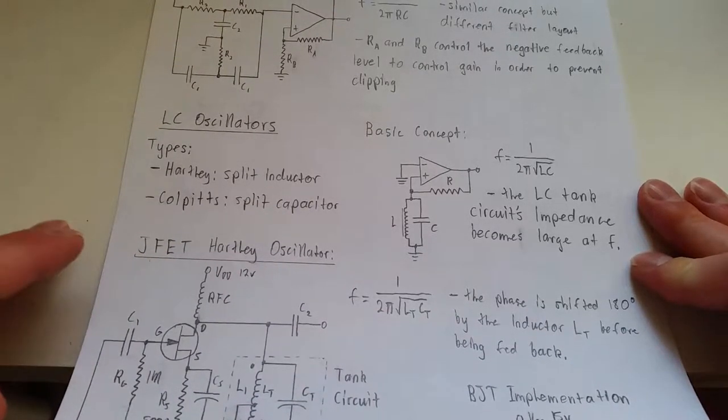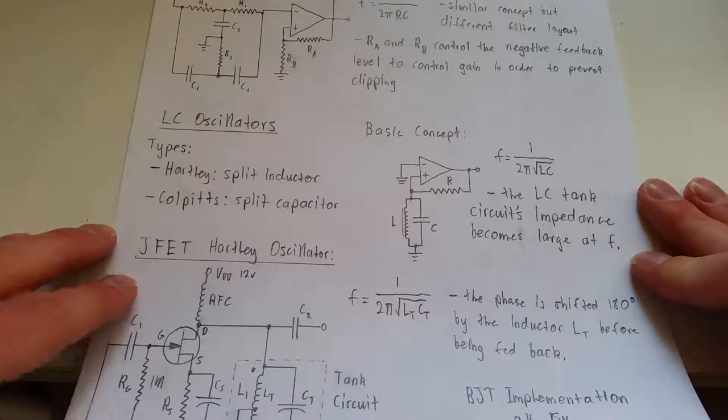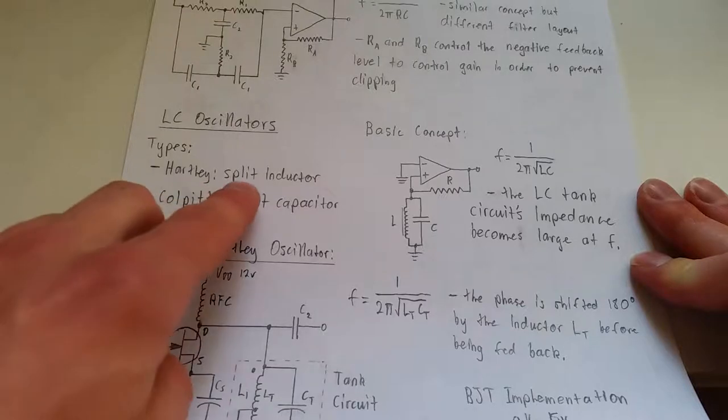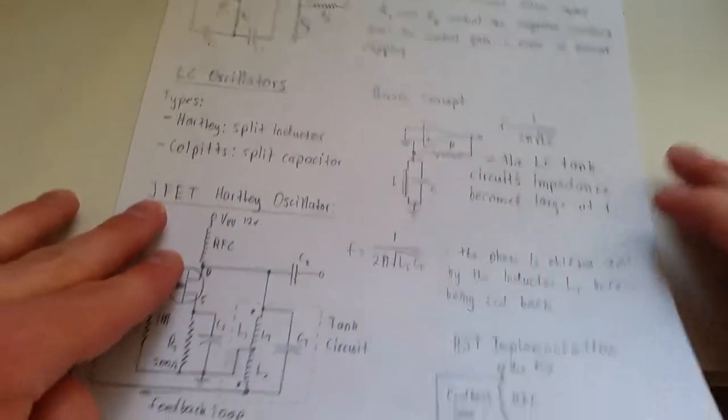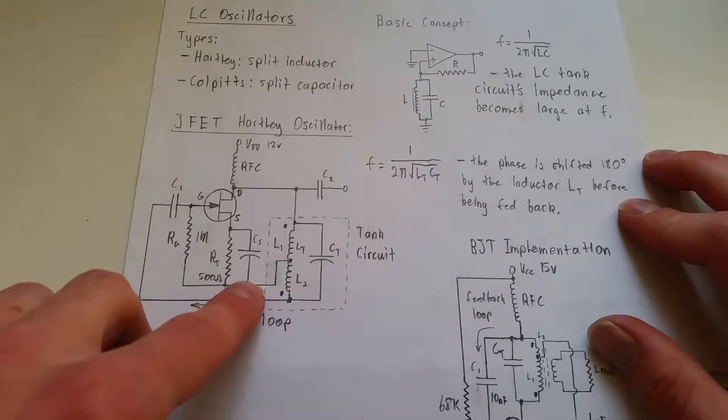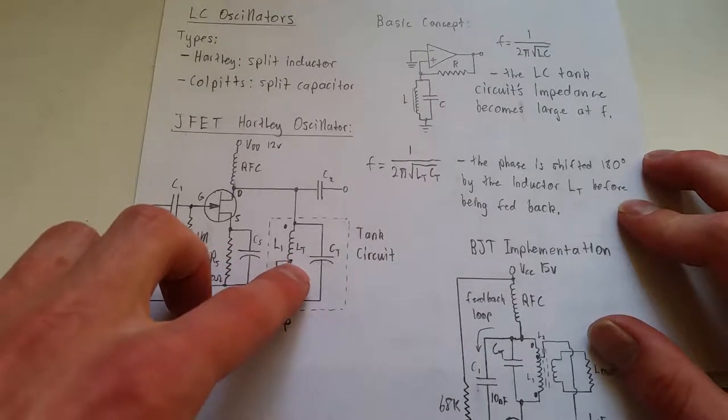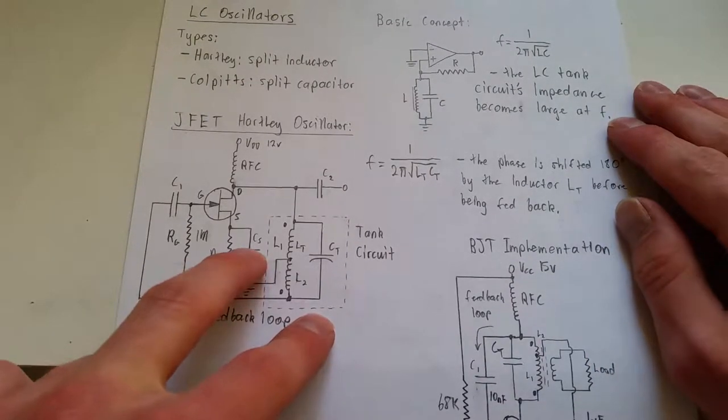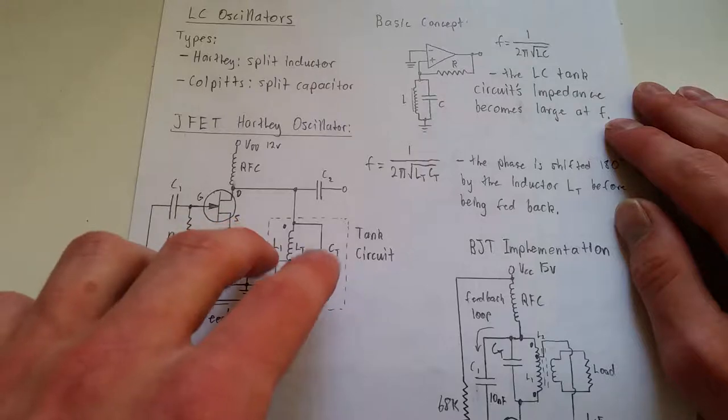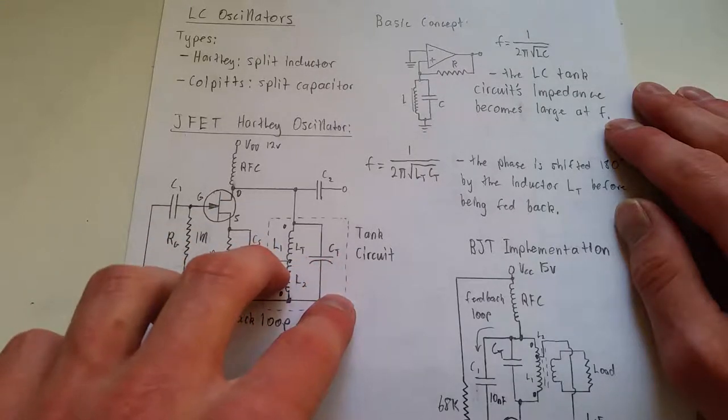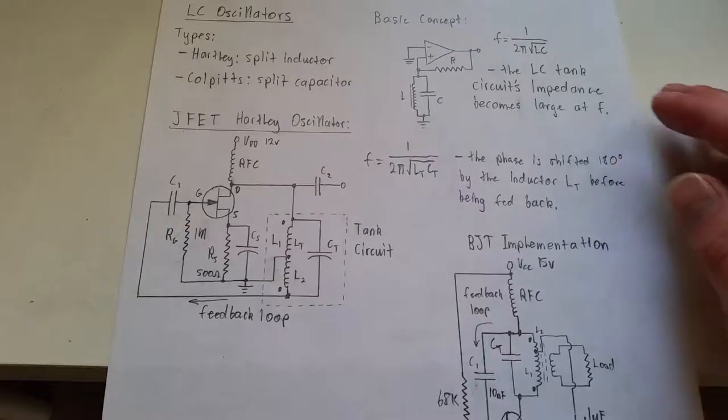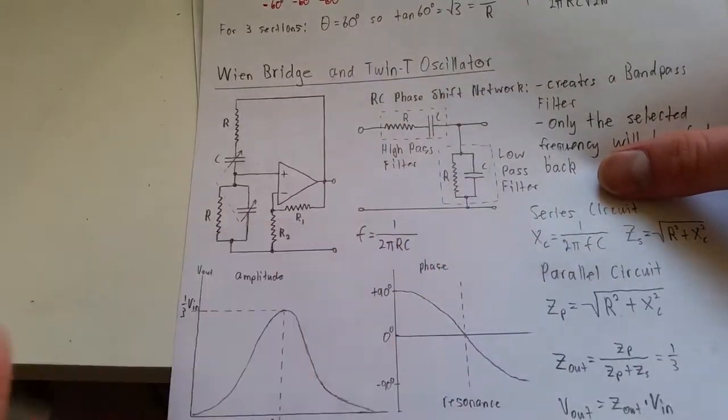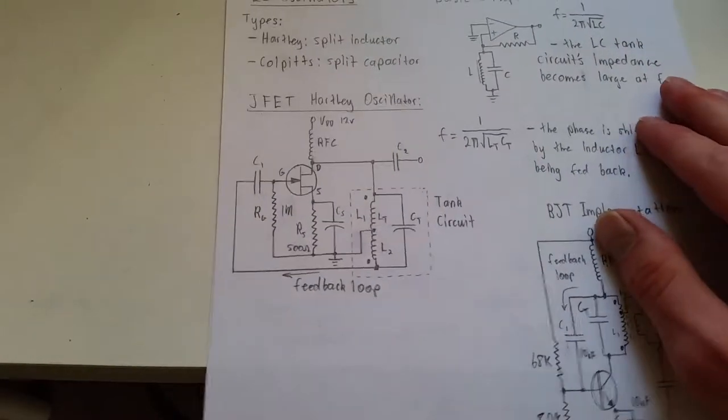And there's two types, mainly two types. There's more, but they're all based on these two. You have a Hartley, these are named after people there. Hartley is known as a split inductor circuit. Like this one here. This is using a JFET transistor. And it's using an LC resonant tank circuit, or what's called a resonant tank circuit. Where you have an inductor and a capacitor. And they resonate at a frequency, at a peak frequency. Kind of like the one here where you have a low pass and a high pass filter. It's the exact same thing. You know, just different components.